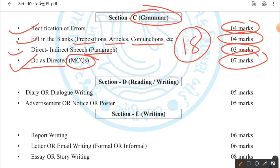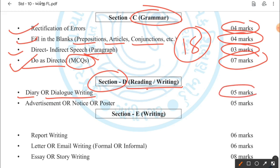Section D is the reading and writing section. First: diary entry and dialogue writing, weightage 5 marks. Then: advertisement, notice, and poster writing — weightage 5 marks. So this is a complete 10-mark section. It's a very good section where you can score well if you are good at writing tasks — diary entry, dialogue writing, advertisement, notice, poster.